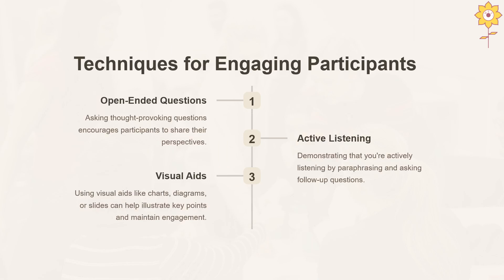What are the techniques for engaging participants? The first one is open-ended questions — you can ask thought-provoking, open-ended questions that give participants an opportunity to speak. Active listening means that when we listen to someone without interruptions, we are able to give meaningful feedback on what they have spoken. Using visual aids such as charts, graphs, diagrams, or slides also helps drive a lot of engagement.